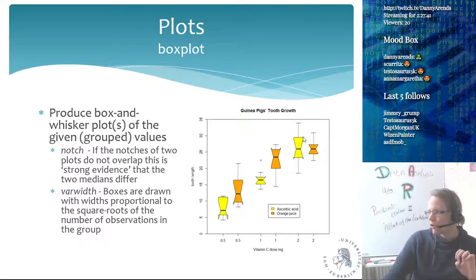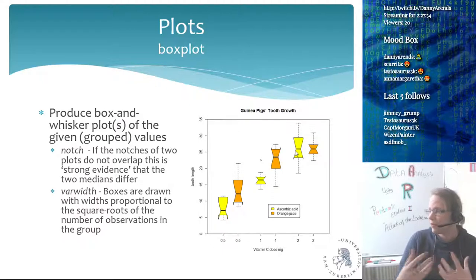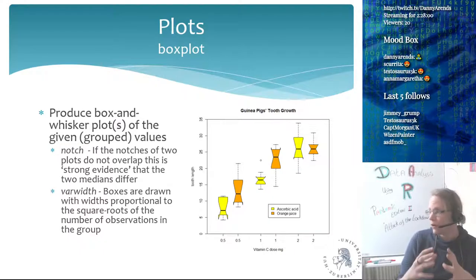When the notches overlap — for example, this notch includes that one — there's no significant difference between those groups. This allows you to very quickly visualize your data and give people an idea of what is significantly different and what is not, without even using a statistical test.